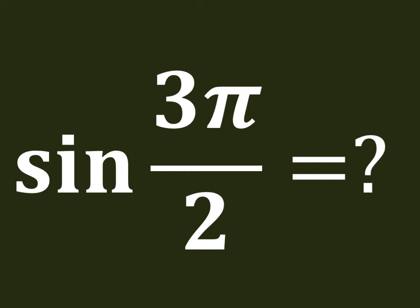In this video, we will learn to find the value of sin(3π/2). We know the trigonometric identity sin(3x) = 3sin(x) - 4sin³(x).